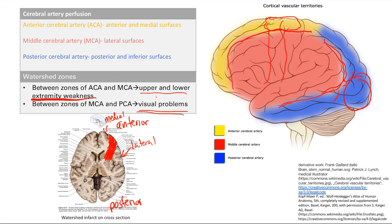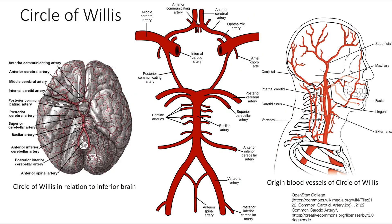For the MCA-PCA watershed zone, the MCA ends around the lateral part of the brain, and the PCA covers the posterior and inferior surfaces. The area right between them is the second watershed zone infarct location — just remember you might be asked about that.